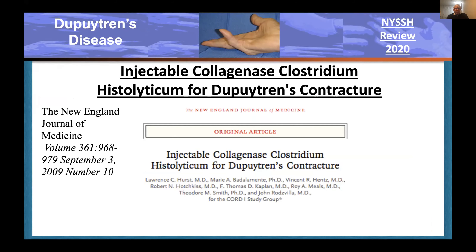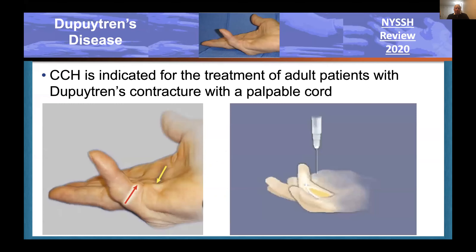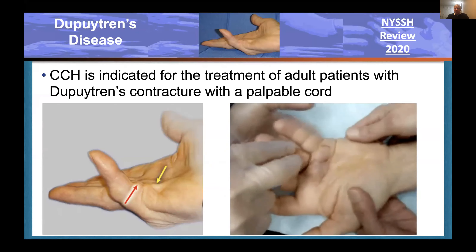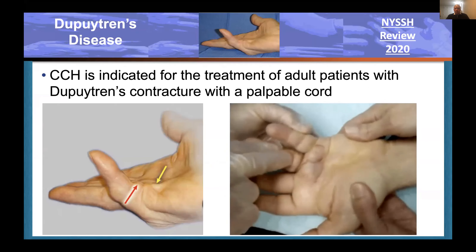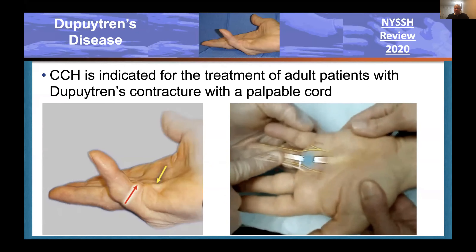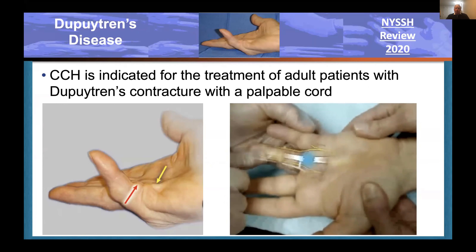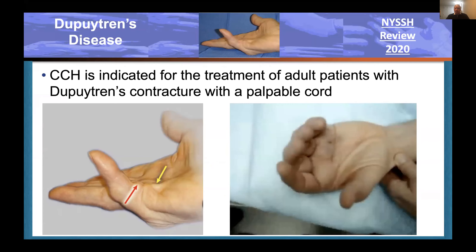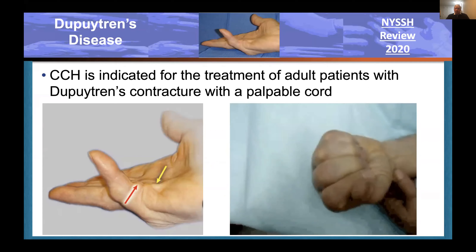In September of 2009, we brought collagenase forward as a possible therapeutic option for Dupuytren's. We started working on this in 1991, and it was approved by the FDA in 2010. Here you see the injection in the cartoon and a manipulation maneuver to break the cord—and one of the great things is you have immediate active range of motion.